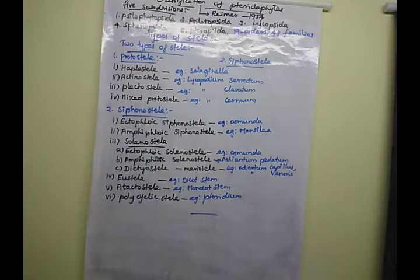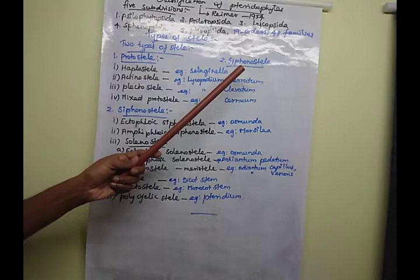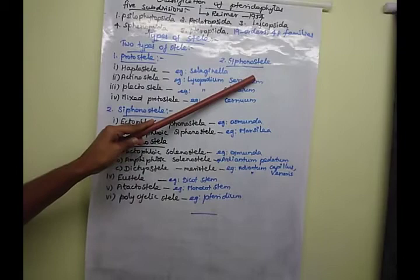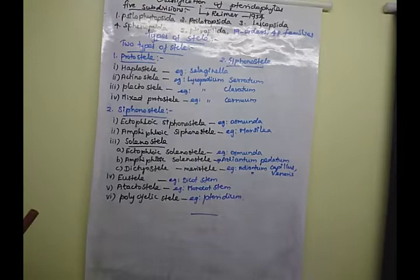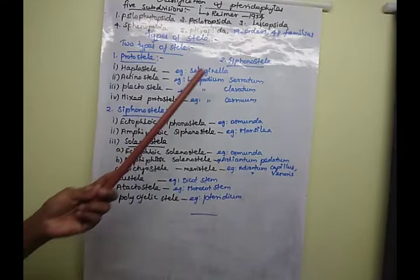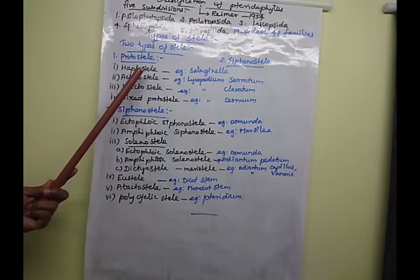The two types of stele are protostele and siphonostele. Protostele means xylem is surrounded by phloem - phloem surrounds the xylem. Siphonostele means xylem surrounded by phloem, but the central region has pith present. Protostele comes under four sub-types; siphonostele also comes under several types.